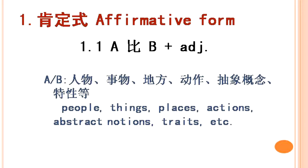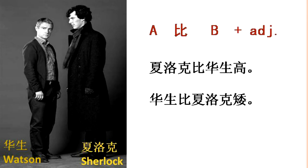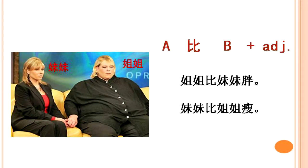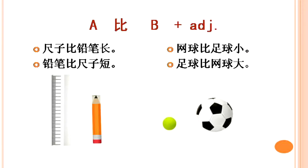The 比字句 has several patterns and the basic one is A比B + adjective. A and B are generally of the same type — they can be most anything such as people, places, things, actions, abstract notions, trades, etc. So we use the A比B + adjective pattern to compare the two persons in the pictures. As to the objects, we can also apply this pattern.